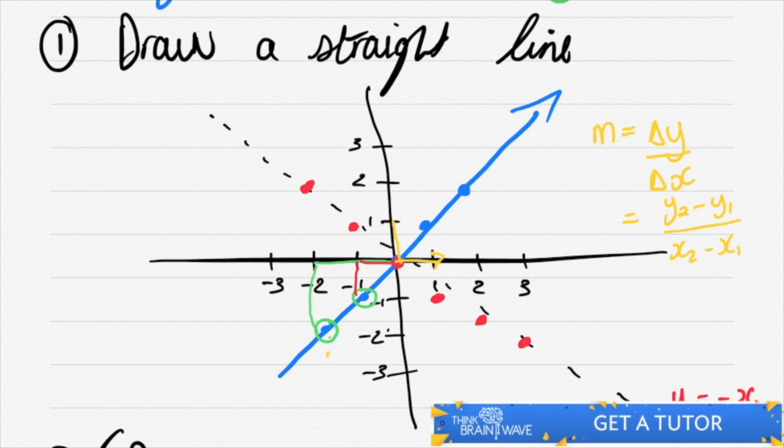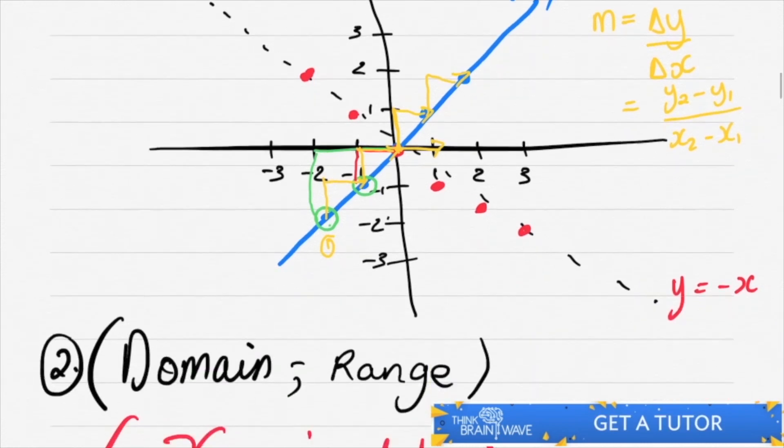So if we started at this point over here, we would actually be going up 1 and right across. And you go up 1 and right across. And so it continues. Let's continue down.